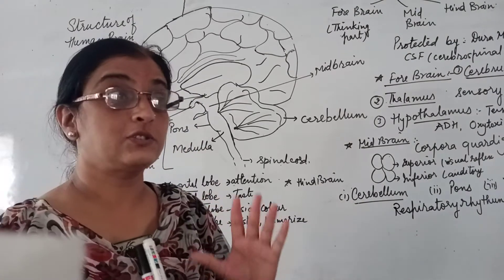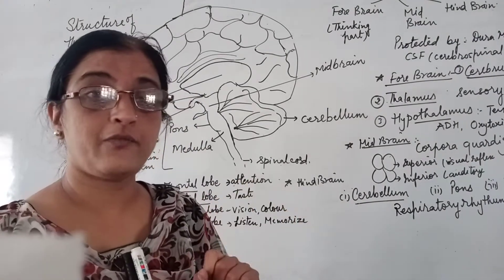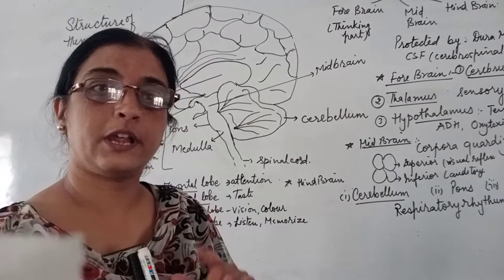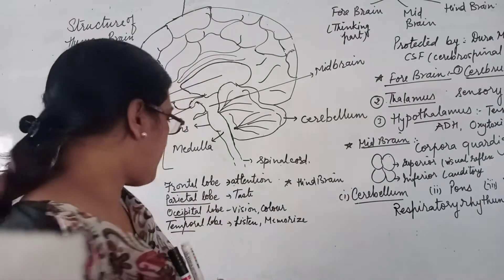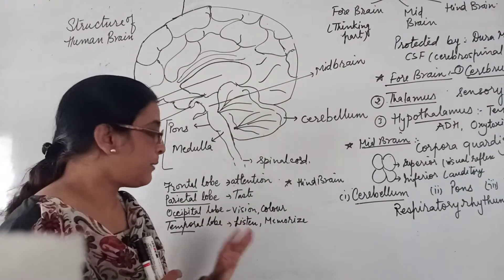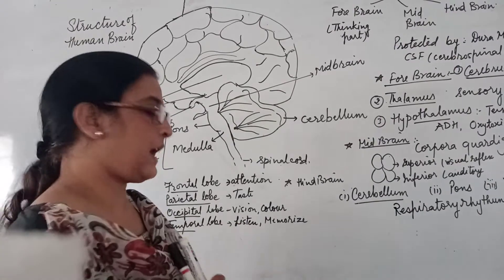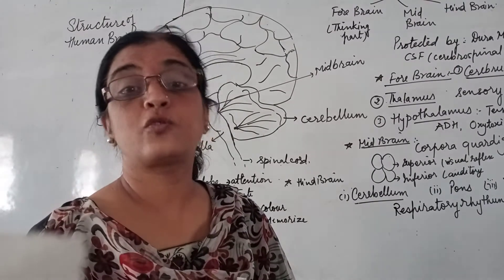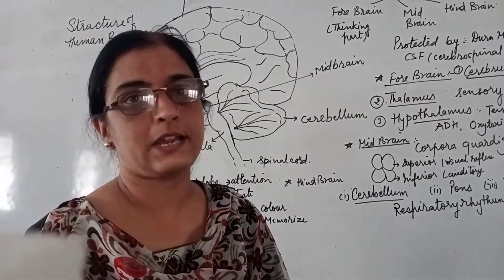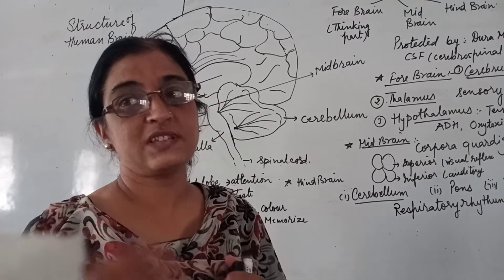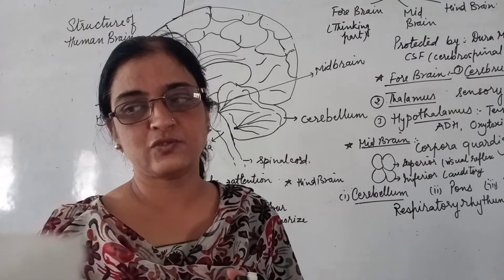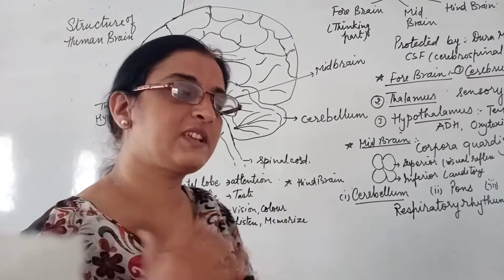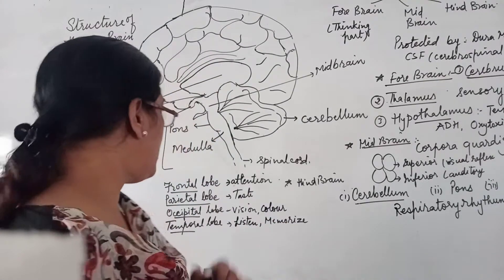The midbrain has four lobes. They are called superior and inferior lobes, which together are known as corpora quadrigemina. These four lobes are called corpora quadrigemina.